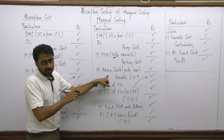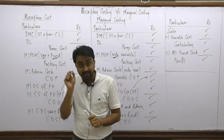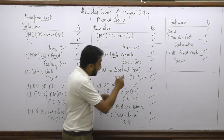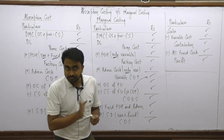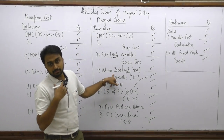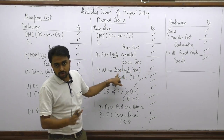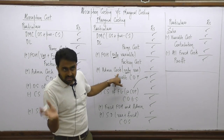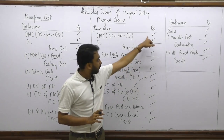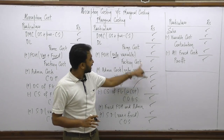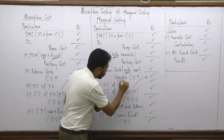Moving to admin costs: since admin costs are generally fixed, and if the question is silent on this, we assume them to be fixed. Therefore, no portion of fixed admin costs is added at this stage. If there are any variable admin costs, only the variable portion is added here. Since we are adding only variable costs, the resulting cost of production is purely the variable cost of production. This is the major difference between absorption costing and marginal costing — COP here is variable-only.